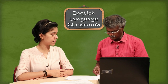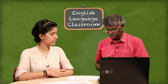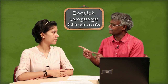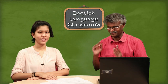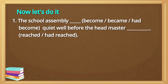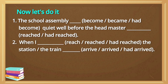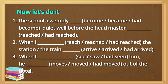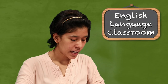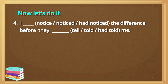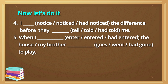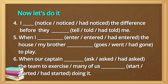Now we are giving you some particular focused activity with three options. Here is Yukta to read out and she will later give the correct form. The sentences: 'The school assembly become / became / had become quite well before the headmaster reached / had reached.' 'When I reached / had reached the station, the train arrived / had arrived.' 'When I see / saw / had seen him, he moves / moved / had moved out of the hotel.' 'I noticed / had noticed the difference before they tell / told / had told me.' 'When I entered / had entered the house, my brother goes / went / had gone to play.' 'When our captain asked / had asked the team to exercise, many of us start / started / had started doing it.' You must have noticed — it is past perfect and past.